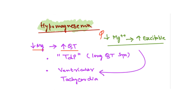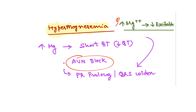Now we will discuss magnesium and its effect on ECG. Magnesium and calcium behave more or less similarly. In decreased levels of magnesium, there is increased excitability of cardiac cells. As magnesium levels go down, QT interval increases, leading to torsades de pointes — long QT syndrome — and ultimately ventricular tachycardia. Conversely, hypermagnesemia leads to decreased excitability of cardiac cells and a short QT interval. This leads to AV node block, AV conduction block, PR prolongation, and QRS widening.